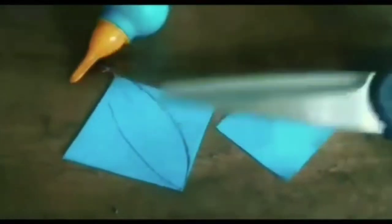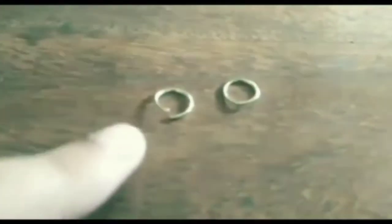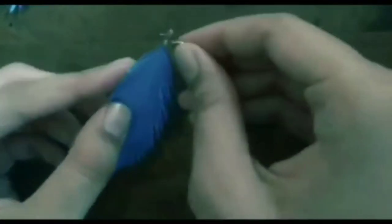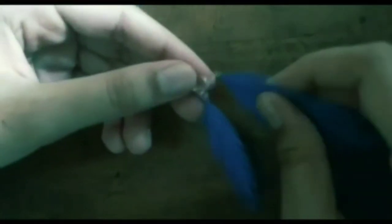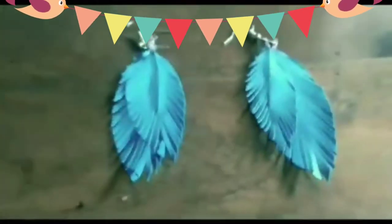Make a feather shape and design it as shown. Repeat the same with the other pair. Now insert the jump holes into the elastic loop. Put the large and small feather together. Plug the ear hook in the jump hole and feather earrings are ready to wear.